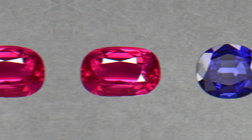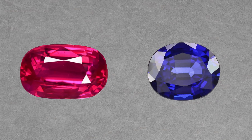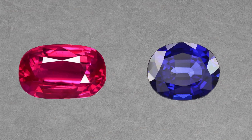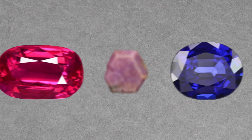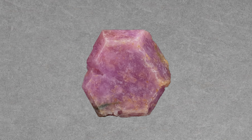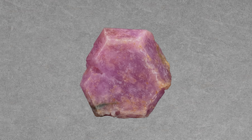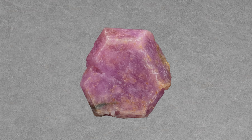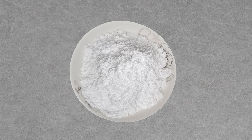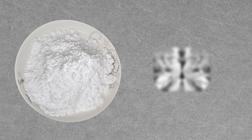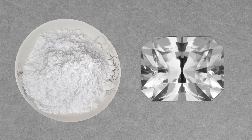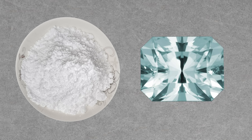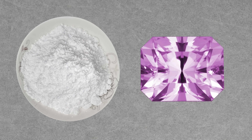Now let's take a look at how they're made. For ruby and sapphire, the process is the same since they're the same variety of gemstone — corundum. You take your base corundum ingredients, aluminum oxide powder, which produces synthetic white sapphire, and add coloring agents to get the red or blue you desire.